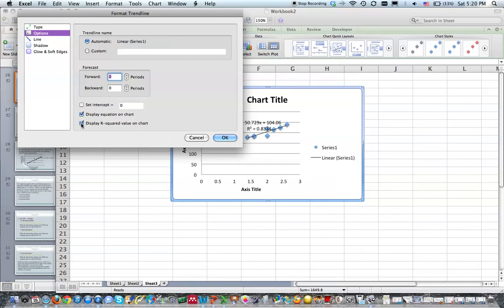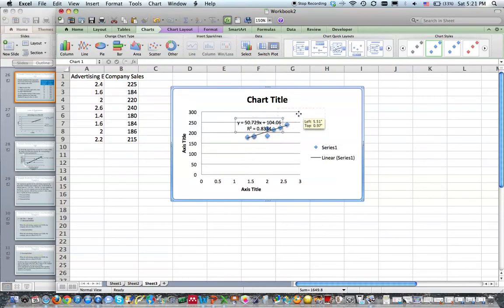Just make sure you click linear, display equation on chart, and display r value. And then Excel pops up the equation for us, which is the y hat equals mx plus b. And it gives us the r squared value, which we will discuss later as well.